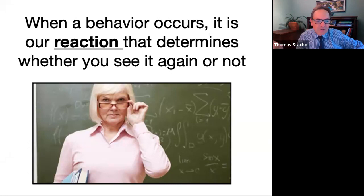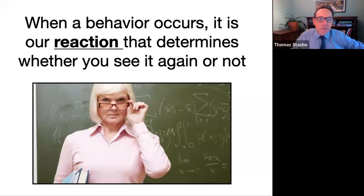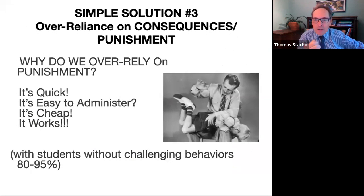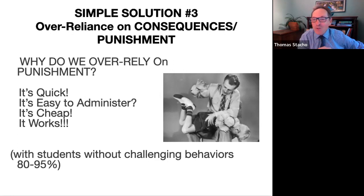Is that kid responsible for his own behavior? Should he have followed the direction? Yes. But did that teacher escalate the behavior? In the chat box, tell me what that adult did to make the behavior worse. I'm hearing: she went back and forth, got into a power struggle. These are all great answers. A lot of behavior management goes back to me and what I can control. Another simple solution is an over-reliance on consequences and punishment. No one's saying we get rid of consequences, but if that's all we're doing, we're missing the boat.